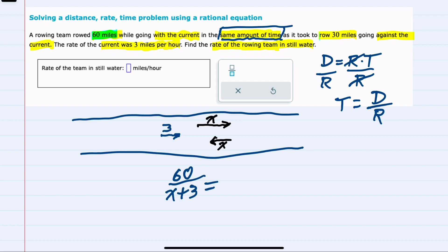And then against the current, they rowed for the same amount of time. But now our distance is 30, and the rate that they are moving is now going to be X minus the current, which is 3.